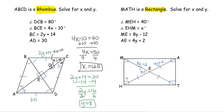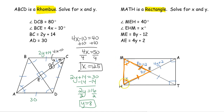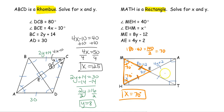Looking at x first — the diagonals form a triangle, and looking closer it's an isosceles triangle. This piece is congruent to this piece, those are the legs, making it isosceles. In an isosceles triangle the two base angles are congruent. So: 180 minus 40 leaves 140 degrees, which we split equally between the two base angles, giving 70 degrees each. Therefore x equals 70 degrees.